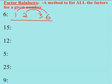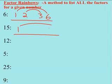Let's try 15. Again, I start with 1. 1 times 15 equals 15. Does 2 go into 15? Nope. Notice how I'm counting up. Does 3 go into 15?